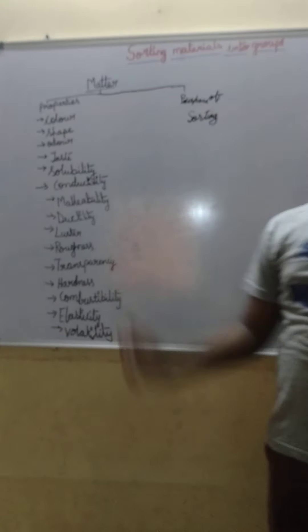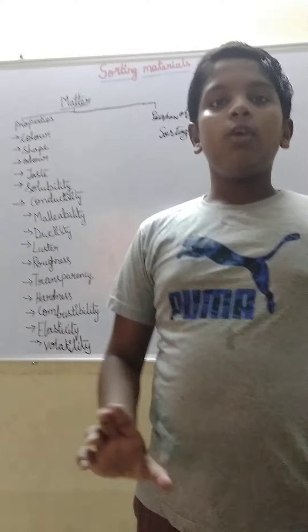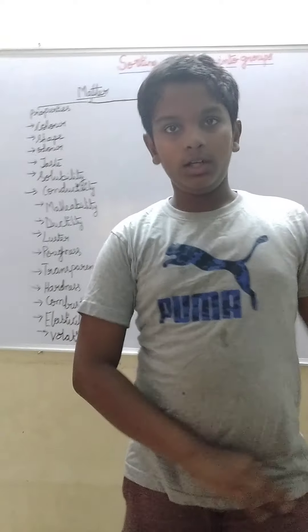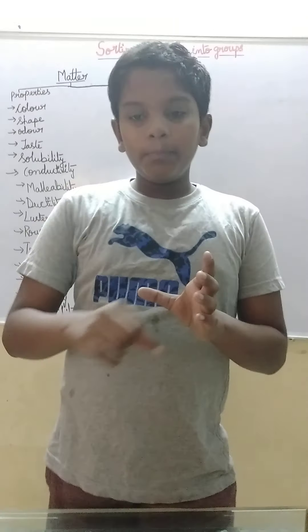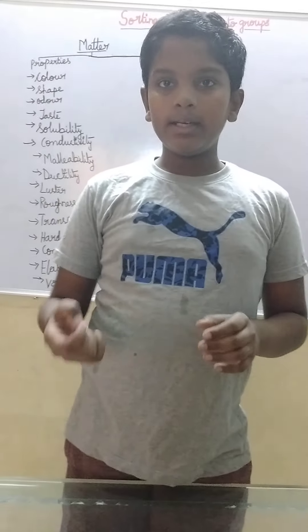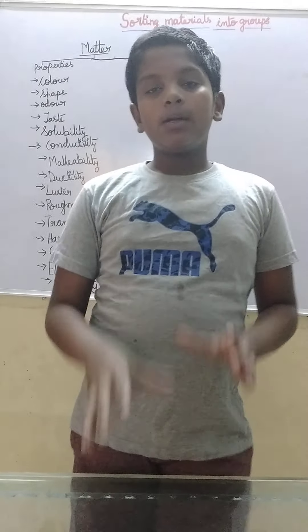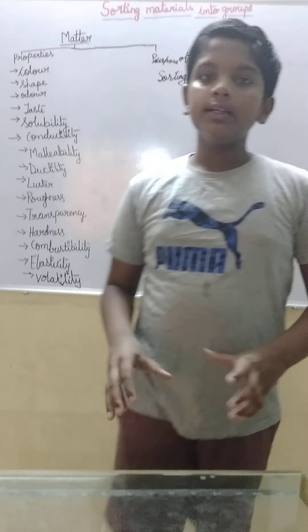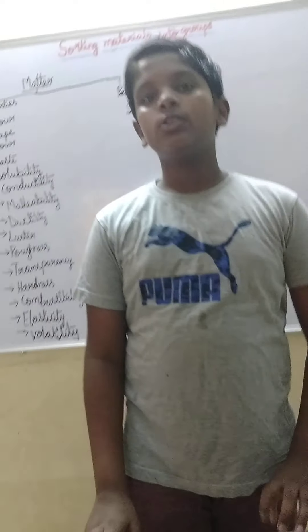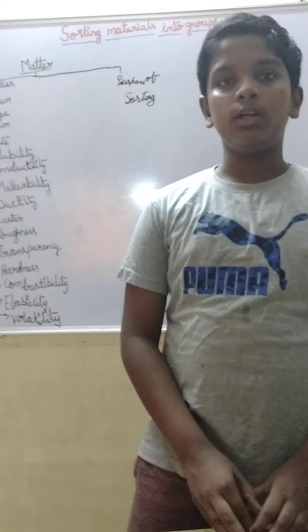Solubility. We need water to check which material is soluble or which is not. Take water, mix any material in powder form — if it disappears and mixes with the water, it is soluble; if it doesn't, it is insoluble. For example, salt and sugar are soluble in water, while chocolate powder is insoluble.